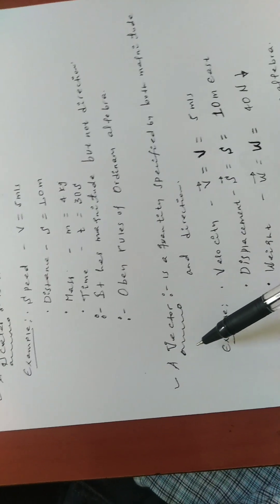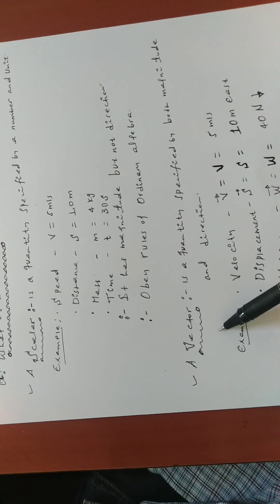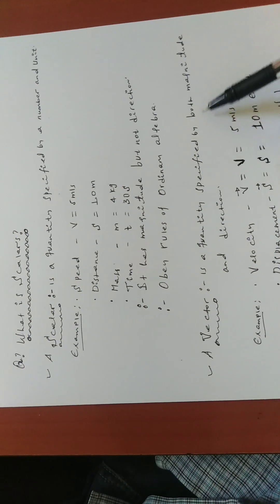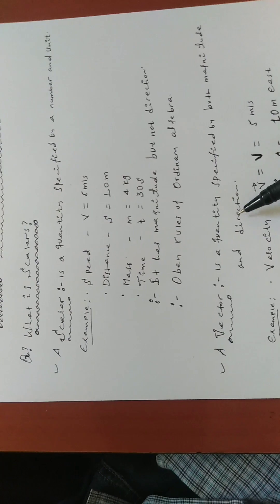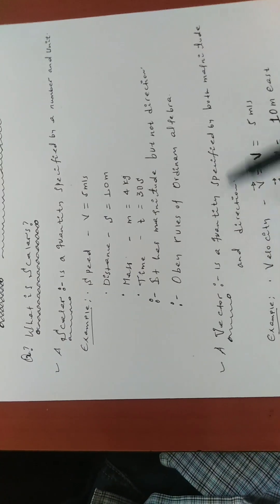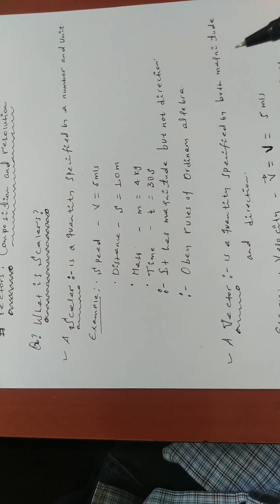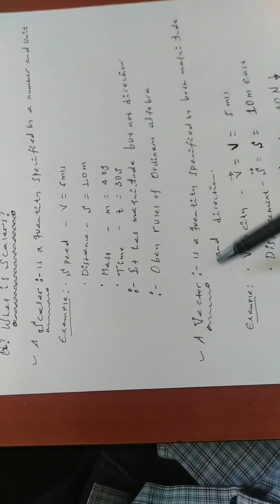Now let us see the vector. A vector is opposite to a scalar — a vector is a quantity specified by both magnitude and direction. As we saw, a scalar is specified only by magnitude, but a vector has both magnitude and direction.